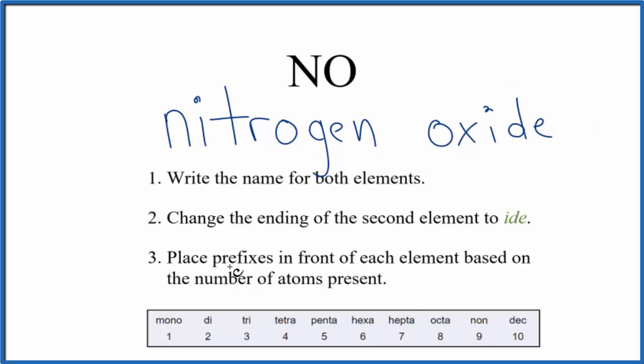But we're going to use prefixes now, put them in front of each name here, based on the number of atoms present. So we have one nitrogen and one oxygen. For the first element, we don't put a prefix mono. We could put a prefix di-tri-tetra if we had more than one element. But with just one element, we leave it the way it is.